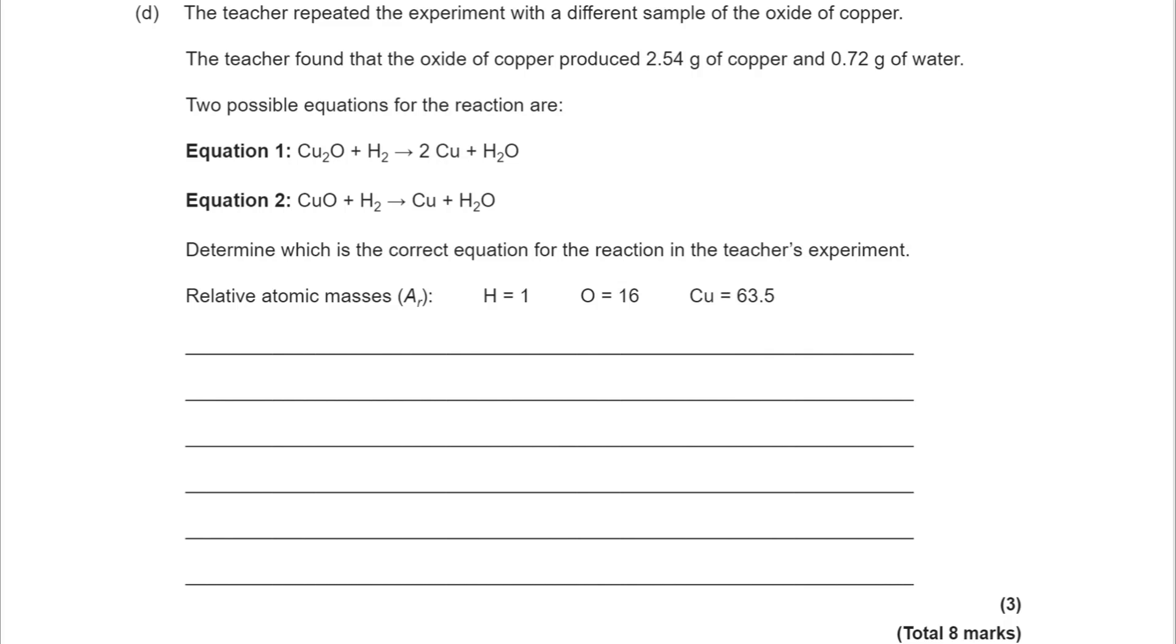The first thing I would recommend is if you're given a mass and you can find its relative atomic mass, work out the number of moles. In this case, moles of copper: 2.54 grams divided by 63.5 means we've made 0.04 moles of copper.